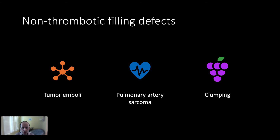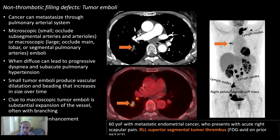Moving on to non-thrombotic filling defects: tumor emboli. This looks like a PE but instead of thrombus it is actual tumor embolizing into the pulmonary artery, as seen in this patient with endometrial cancer — it is FDG-avid on PET-CT. In tumor thrombus the vessel tends to be quite expanded, much more so than in acute PE. In acute PE, vessel enlargement is described but is typically very mild. If you see true marked enlargement of a pulmonary artery with a filling defect, question whether it could be a tumor embolus.